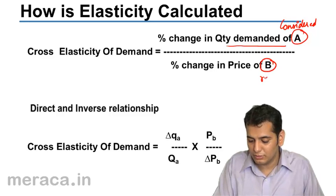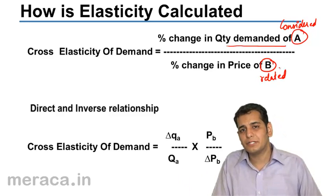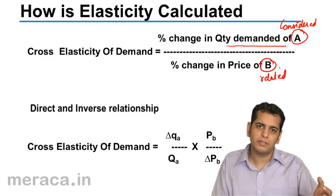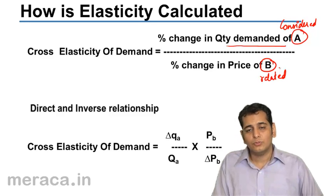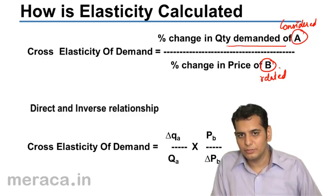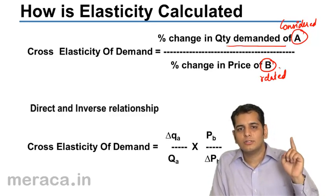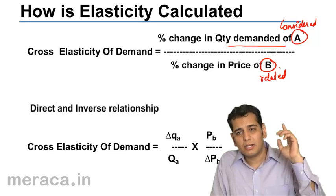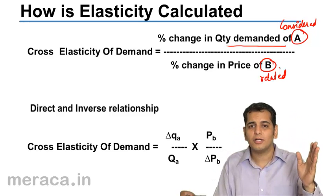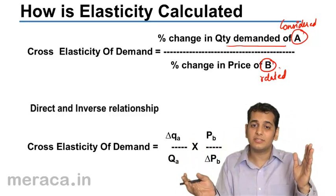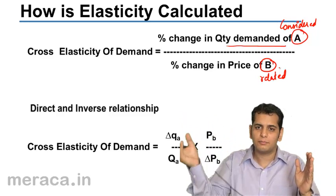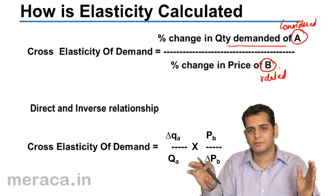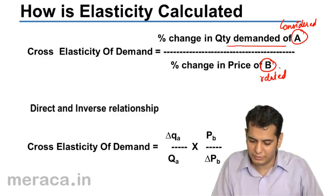In the denominator we take the percentage change in the price of the related good, that is good B, which may be a substitute or a complement. The important thing to note is that a change in demand of one product is based upon a change in the price of some other product, and that other product may be a substitute or a complement.